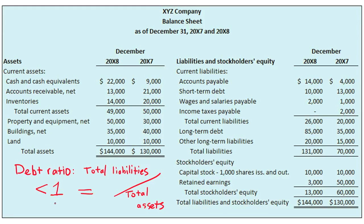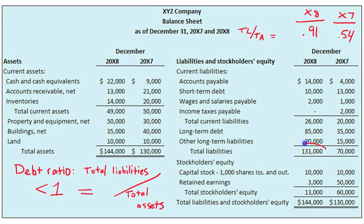Here are XYZ's debt ratios for 20X8 and 20X7: 0.91 for X8 and 0.54 for X7, computed as total liabilities divided by total assets for each respective year. Based on these debt ratios, it is clear that XYZ is on a negative trend toward insolvency as its liabilities increase as a percentage of its assets. Lenders and investors seeing this trend should be very cautious.